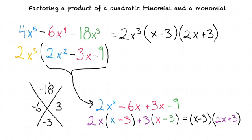So to factor a polynomial, we first check if there is a greatest common factor of each term, which can be factored out of the whole equation. And then we try to factor what's left.